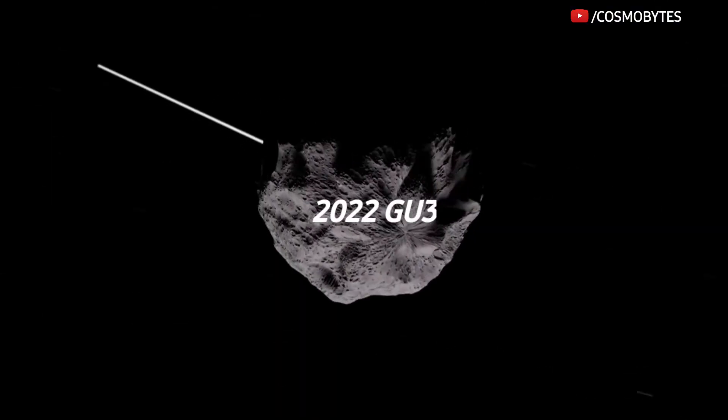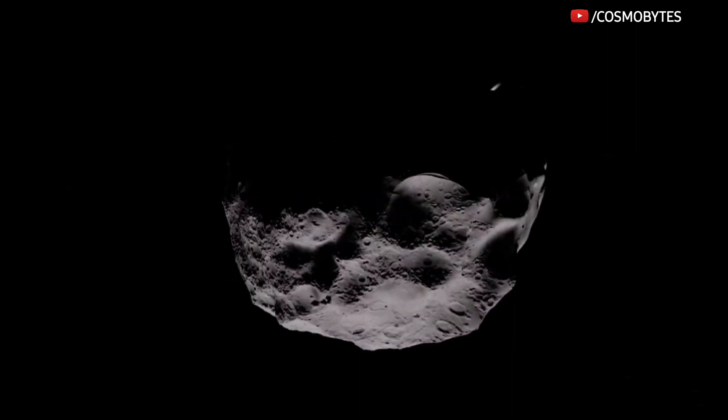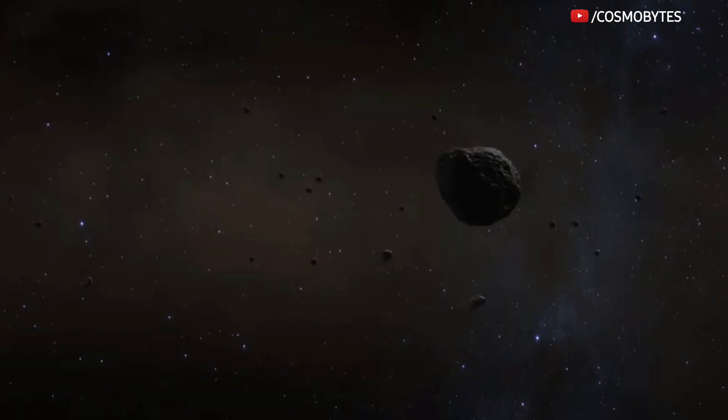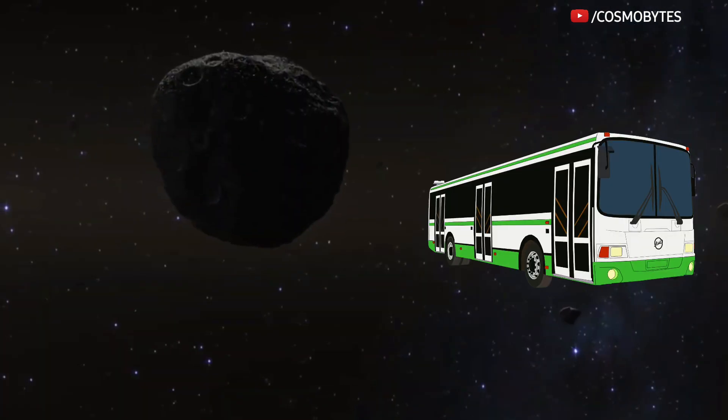The 2022 GU3 is a 79-feet-wide asteroid which can be compared to a Boeing 747 jet, while 2017 UR2 is 32 feet wide and is as large as a bus.